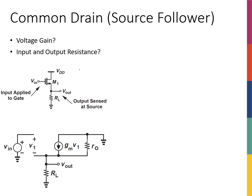This is how it looks like. We call it common drain because the input is connected to the gate and the output is read from the source, and the drain is the only terminal of this transistor that is not connected to either input or output. That's why we call it common drain. The first thing we need to do for gain calculation is to draw the small signal model.